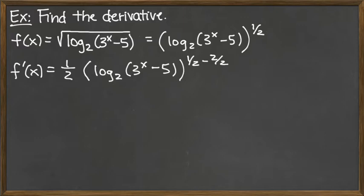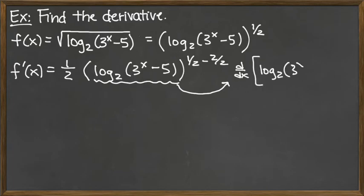So to continue on here with the derivative, since the base was not just x, but rather an ugly function of x, we would have to take the derivative of the inside there. So we'd be taking the derivative of log base 2 of 3 to the x minus 5.